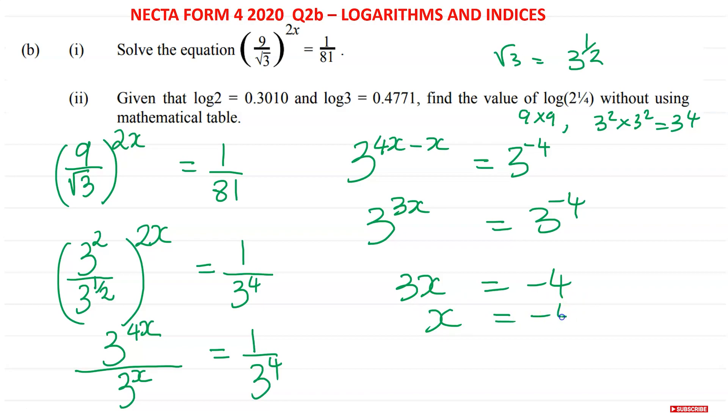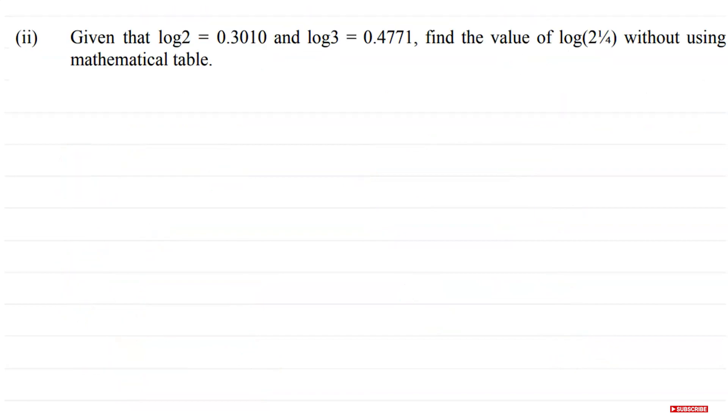Therefore we divide by 3 on both sides. Therefore x is going to be equal to -4/3. This is the answer for b(i). Now for part ii, we are given log 2 = 0.3010 and log 3 = 0.4771. We need to find the value of log(2¼) without using mathematical tables.